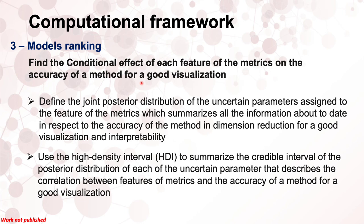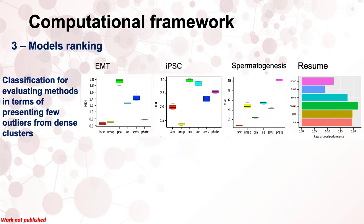Based on the Markov Chain Monte Carlo sample of the posterior distribution of the uncertain parameters assigned to the features of the metrics, we use the high-density interval to summarize the credible interval of the posterior distribution of each. We then rank the methods in terms of their optimization for good visualization and interpretability of a given biological process.